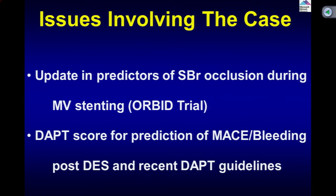Briefly, I know I have presented a few slides, but that can be resource material for all our viewers. Two points we are going to talk about: the newer predictors of side branch occlusion during main vessel stenting — this is the trial which Dr. Keeney has done with the Orbit — and second, the latest data on the DAPT score for prediction of MACE and bleeding post-DES, and the recent DAPT guidelines.